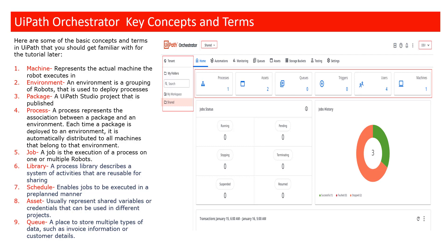What is a schedule? A schedule is when you want to run a job in a planned manner — like cron entries. You can schedule your job to run at a certain time of day or day of the week. What are assets? Assets represent shared variables or credentials to be used in a project or multiple projects. For example, if the SAP URL is the same for the entire organization, create an asset called 'SAP URL' that can be used across multiple projects — you don't need to define the variable again and again.